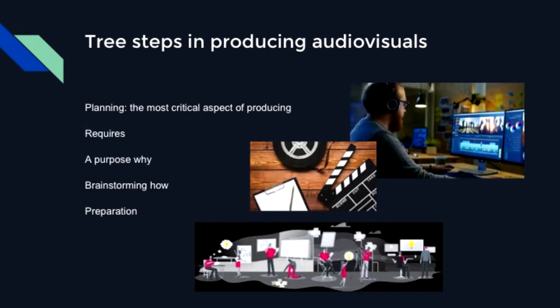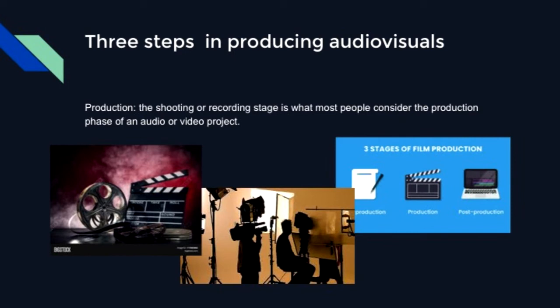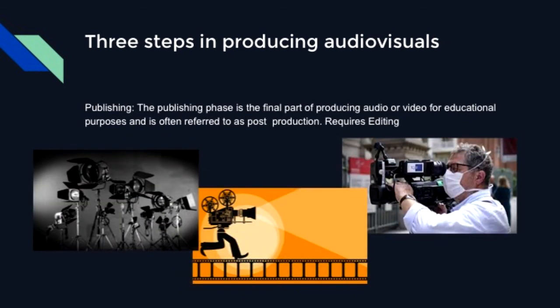There are three steps in producing audio-visuals. First is planning — the most critical aspect, involving identifying requirements, purpose, and brainstorming how to proceed. Second is preparation. Third is production — the shooting or recording stage, which is what most people consider the production phase. In publishing, the final phase is often referred to as post-production and requires editing.